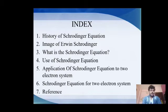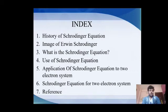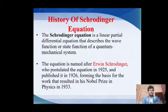This is the simple index which we have to see in the whole slide: the history of the Schrödinger equation, an image of Schrödinger as a great scientist, what the Schrödinger equation is, its use, its application for a two-electron system — that is the main topic — and then the references.